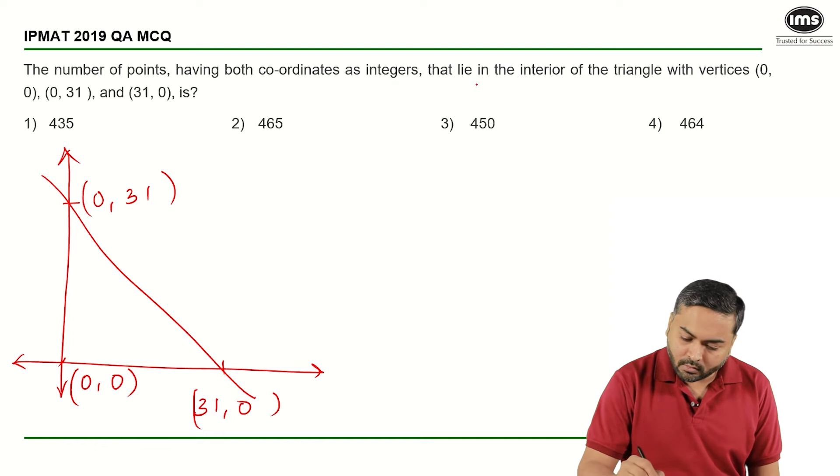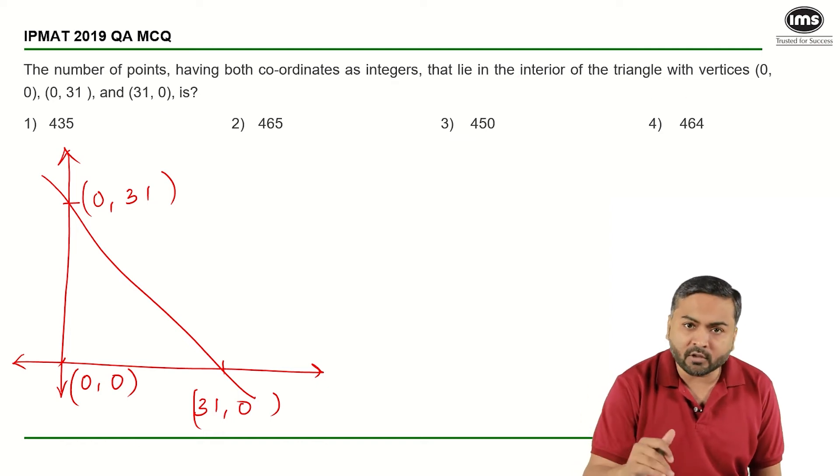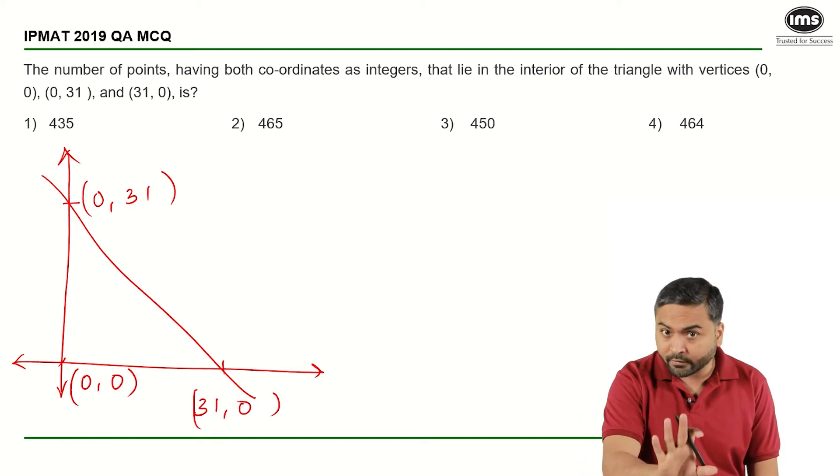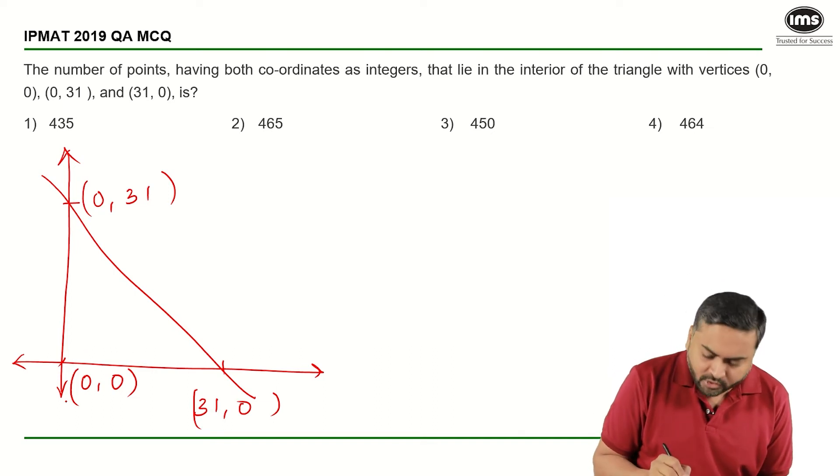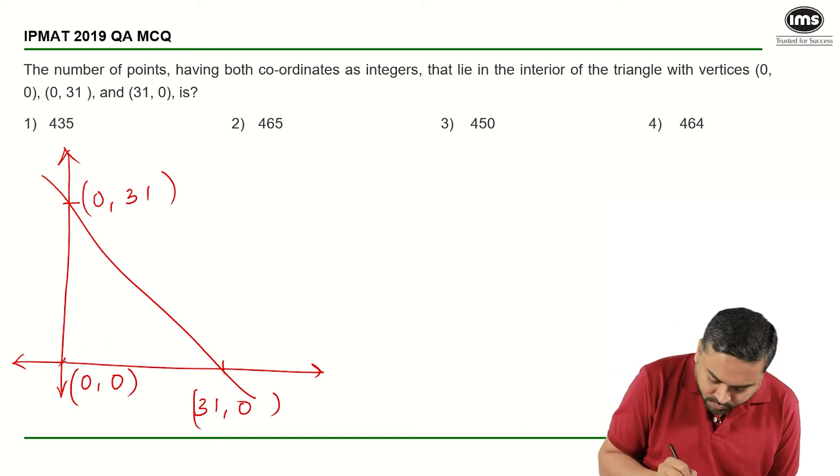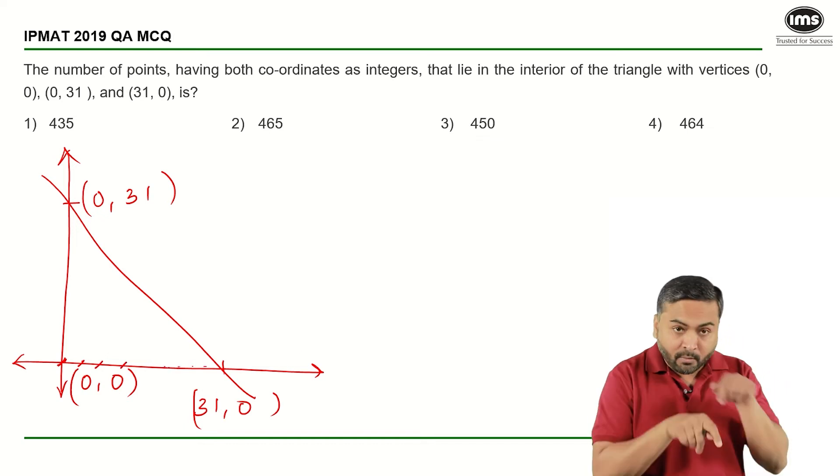If you see this line, the number of points which will be on the x-axis from 0 to 31, there will be 32 points.